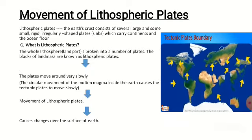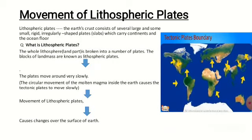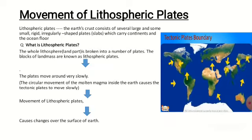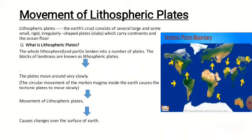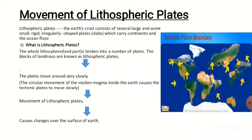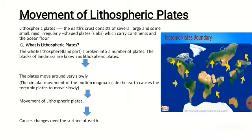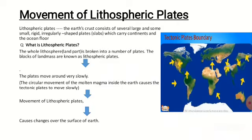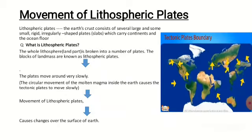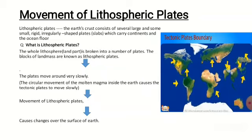Below the plates, beneath the earth's surface, there is molten magma. Due to this molten magma, the plates move very slowly. The movement of lithospheric plates causes changes over the earth's surface. In my next video I will explain this more thoroughly.